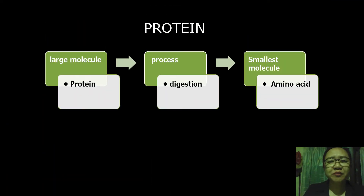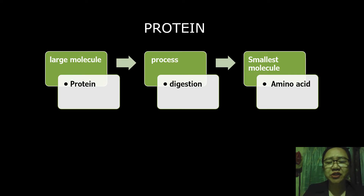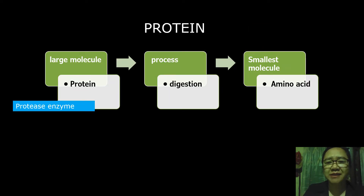You get protein from meats, fish, and eggs that you eat. However, protein is a large molecule. During the process of digestion, the protein enzyme breaks it into its smallest unit called amino acid. Your body cells use amino acids for growth and repair of worn-out tissues.